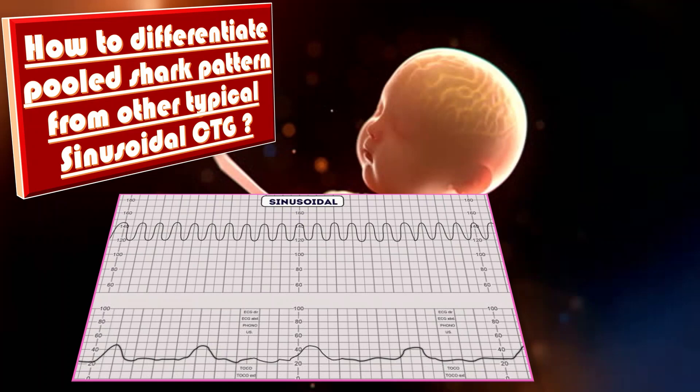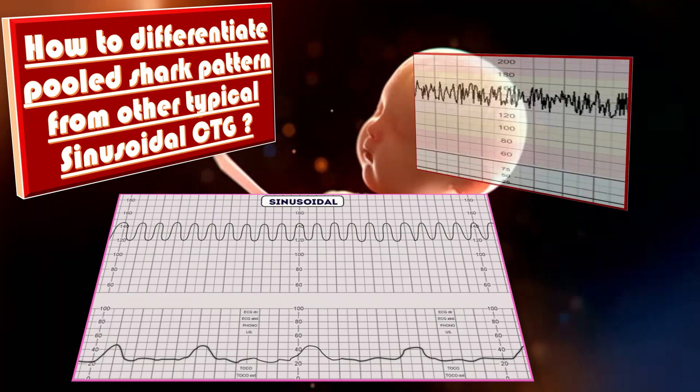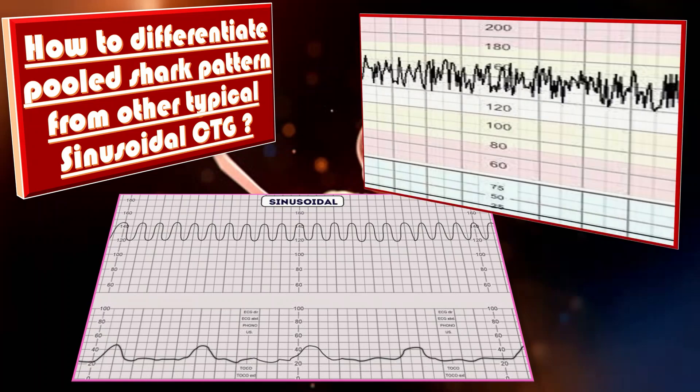The presence of a sawtooth or pool shark pattern is termed the atypical sinusoidal pattern, which is a pattern resembling the sinusoidal pattern but with a more jagged sawtooth appearance rather than a smooth sine wave form.